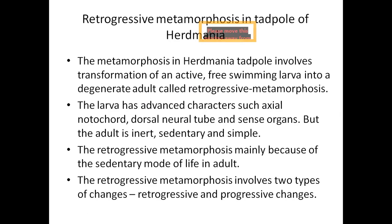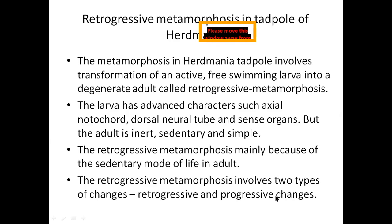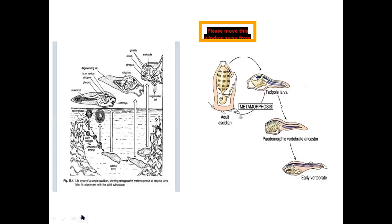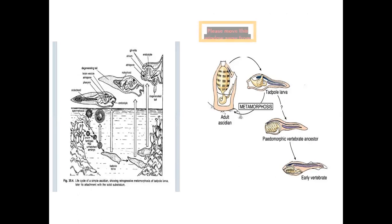The larval form becomes a sedentary adult because the adult of Herdmania has a sedentary mode of life. For a sedentary mode of life, the organism requires a simpler kind of organization. When we look at the metamorphosis in Herdmania, there are both retrogressive and progressive changes. In this picture, you can see the adult is sedentary and this is the larva. There is a transition — the larval form has a vertebrate ancestral form which is repeated in its embryonic development and later develops into a sedentary adult.